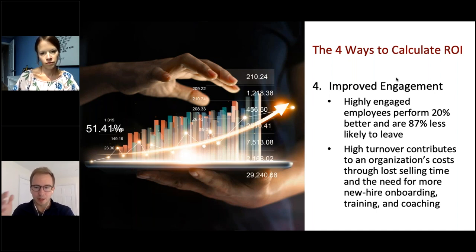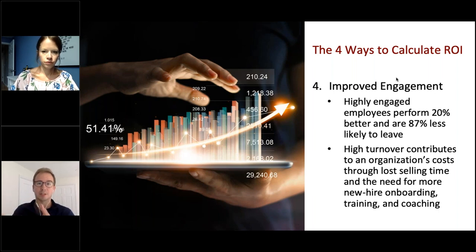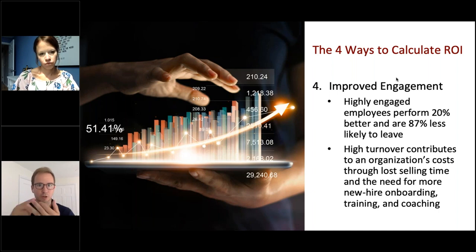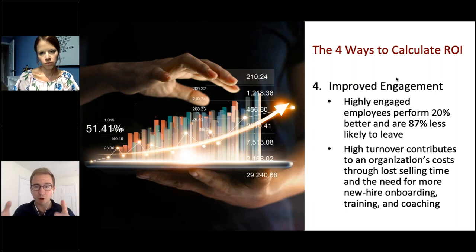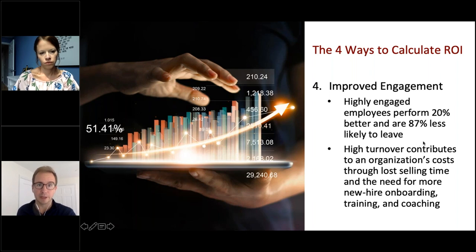Highly engaged employees perform 20% better and are 87% less likely to leave the company — that is really massive. High turnover contributes to an organization's cost through lost selling time and the need for more new hire onboarding, training, and coaching. When you lose a salesperson, you don't just lose that person's salary — you have to account for recruiter costs, hiring costs, training costs, and the cost of not having a seasoned rep in the field selling. Even the best new salesperson will take months to get up to speed with your product after training and onboarding, meaning months of potential lost revenue.